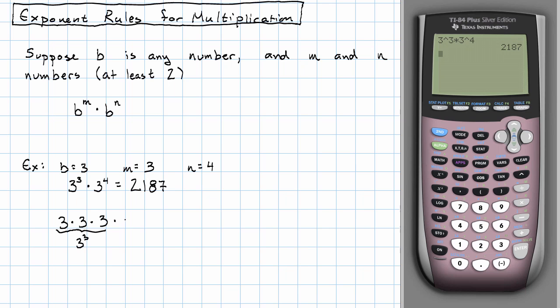3 to the 4th, that would be 3 times 3 times 3 times 3. All right, that's 3 to the 4th.